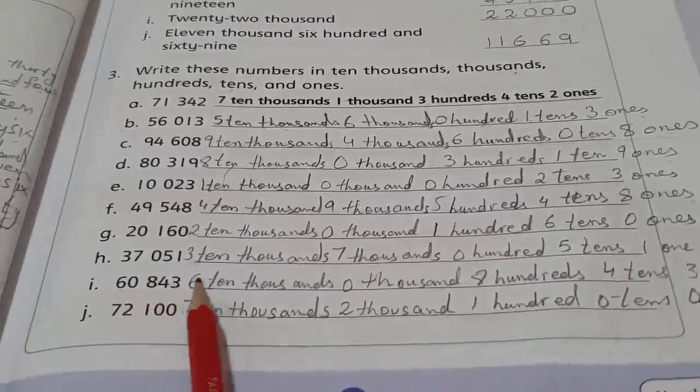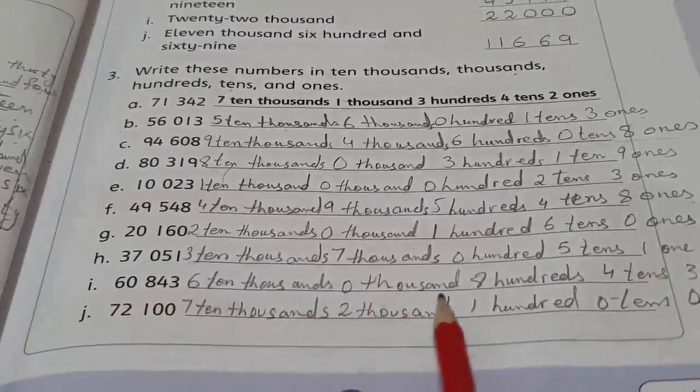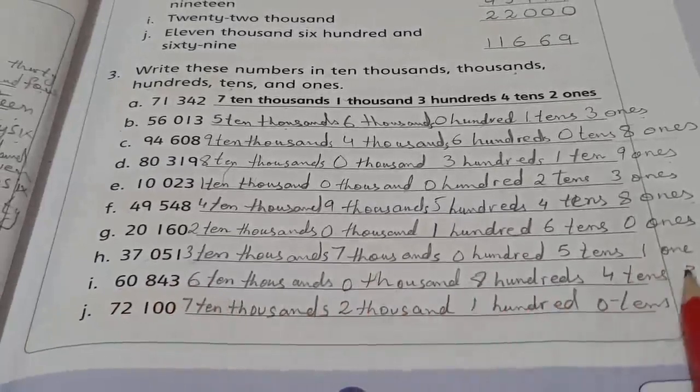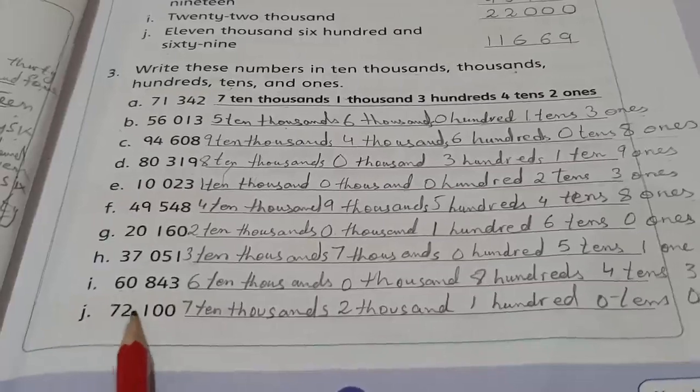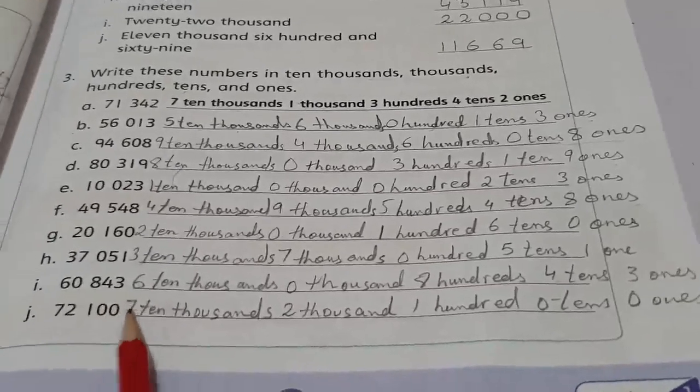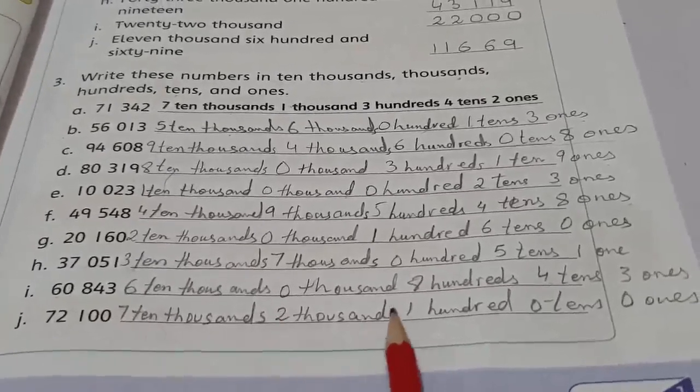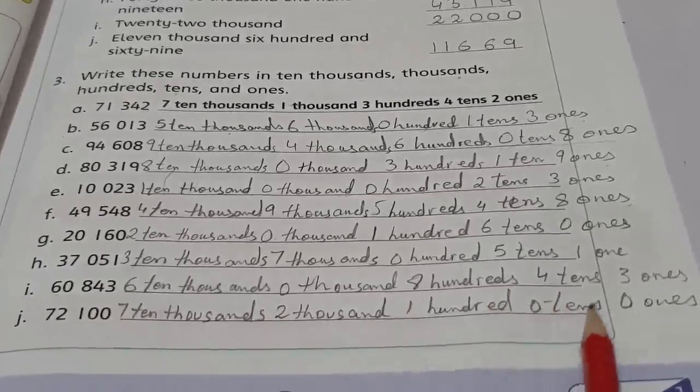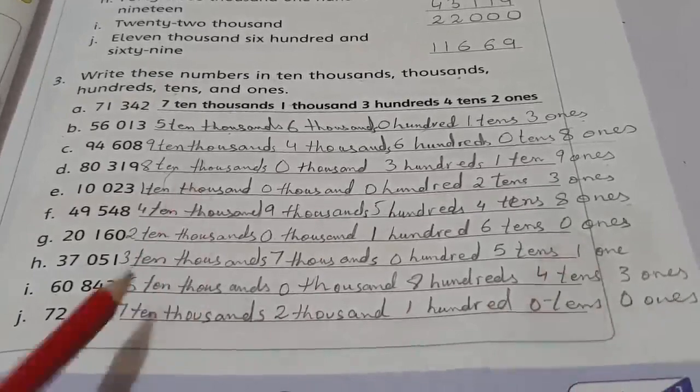I. 60843 - six ten thousands, zero thousands, eight hundreds, four tens, and three ones. J. 72100 - seven ten thousands, two thousands, one hundred, zero tens, and zero ones.